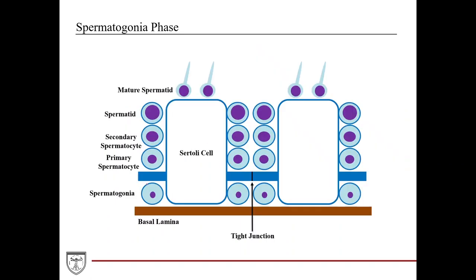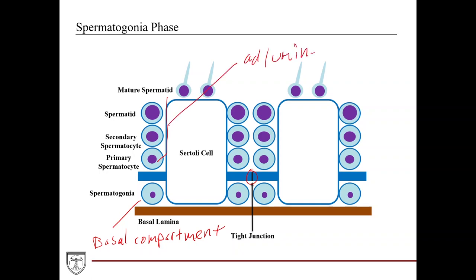Going back to this diagram — you have these tight junctions between the basolateral membranes of the Sertoli cells that separate the basal compartment from the adluminal compartment up here. The spermatogonia reside in the basal compartment and eventually differentiate into the primary spermatocyte, which is found in the adluminal compartment.